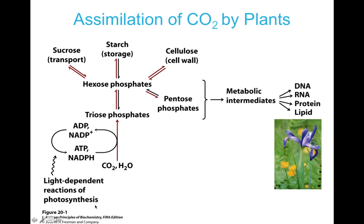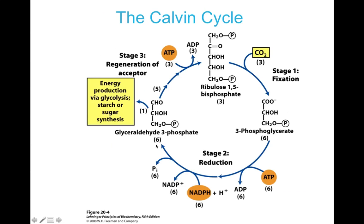This all starts with photosynthesis, but really what we're talking about is how do we create these carbohydrates? The cycle that actually occurs is called the Calvin cycle. The assimilation of CO2 occurs in the stroma of the chloroplast through this process. The key intermediate is known as ribulose 1,5-bisphosphate, which is a molecule that is constantly being regenerated, but we have to use ATP to do that.